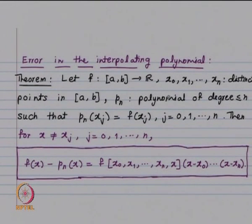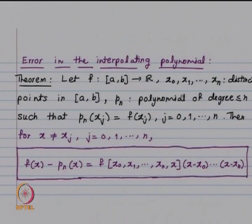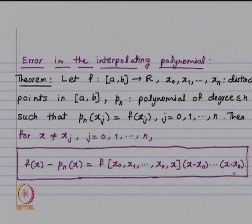The error in the interpolating polynomial: if f: [a,b] → ℝ, x₀,…,xn are distinct points in [a,b], and pn is the unique polynomial of degree ≤ n with pn(xj) = f(xj), then f(x) − pn(x) = f[x₀,…,xn,x] · (x−x₀)(x−x₁)⋯(x−xn), where the second factor is called w(x).